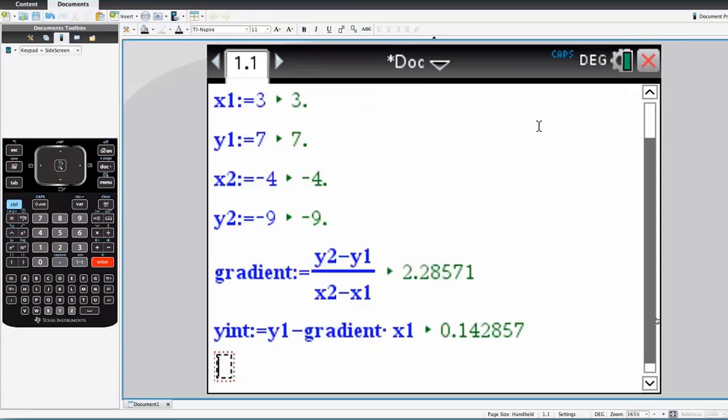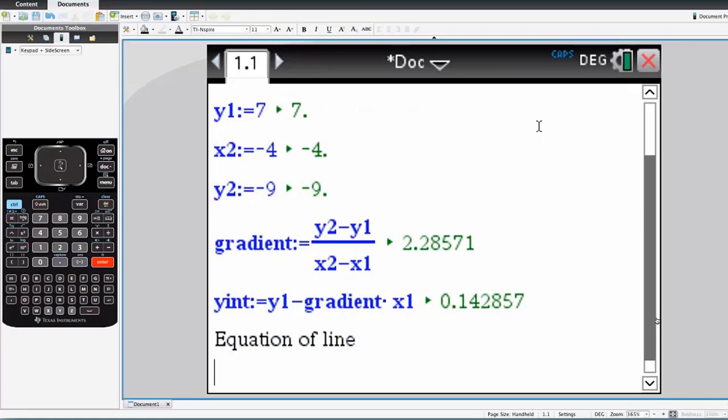And so now you have a notes page that you could use and just enter the known coordinates of the points. And then get it to calculate those gradients and y-intercepts.